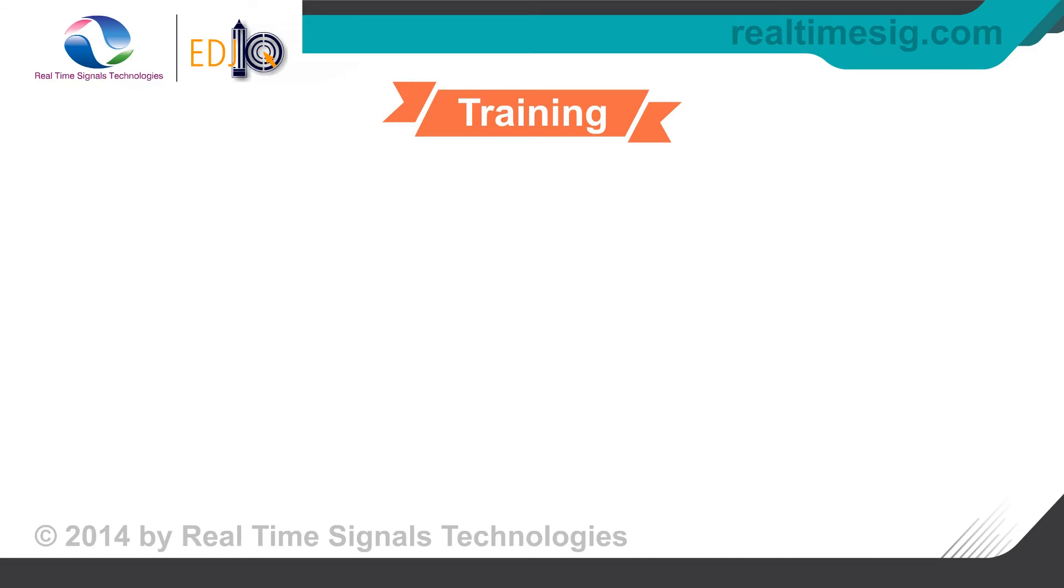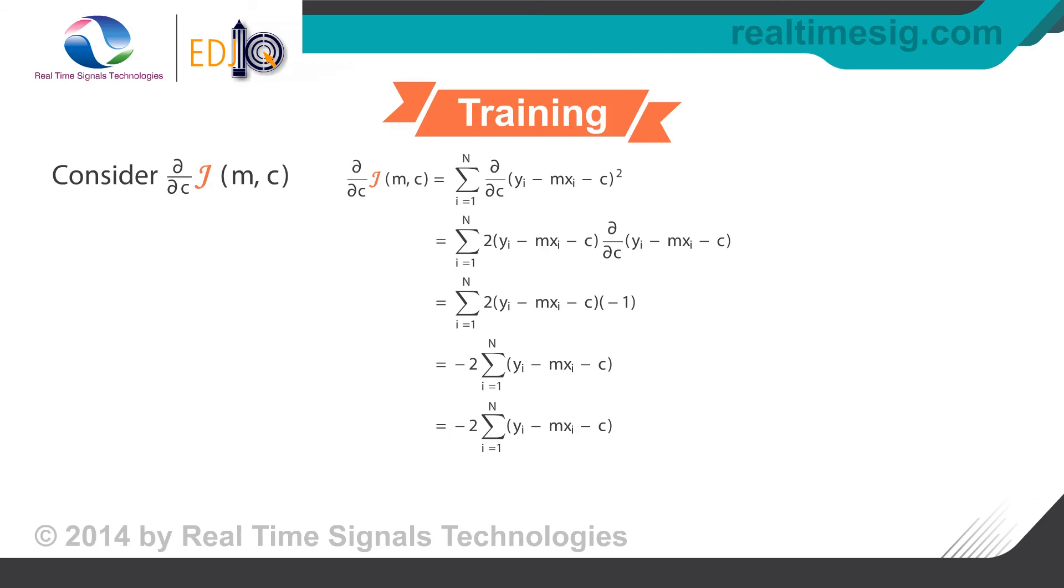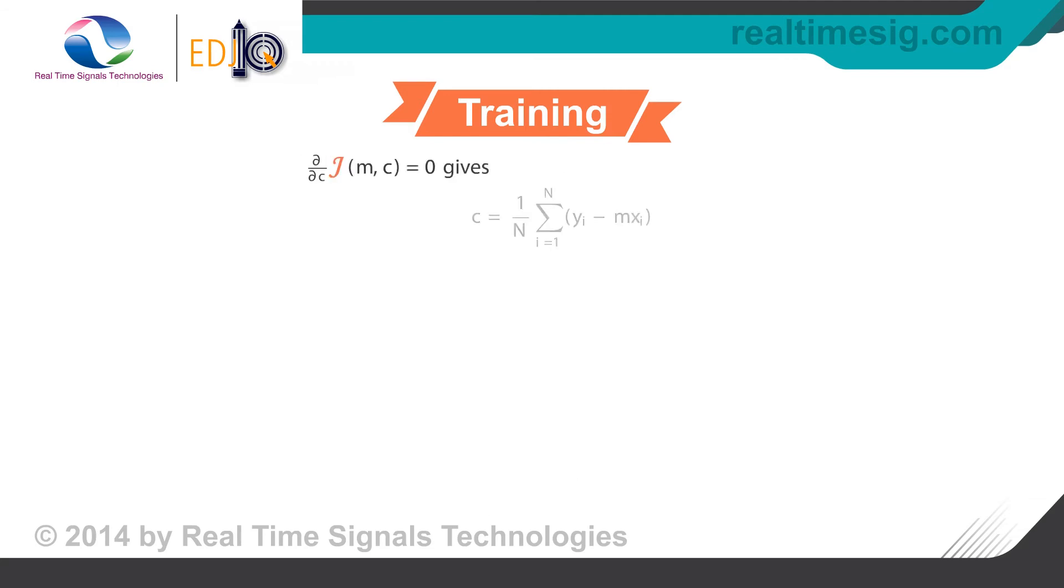Now consider the derivative of our cost function with respect to the variable c. The equations are a result of the chain rule. First line uses the linearity property. Second line uses the derivative of a square and third line uses the derivative of constant properties. Equating the derivative to zero gives us an expression for c, however the expression depends on m also.